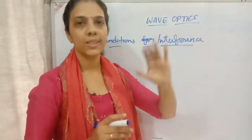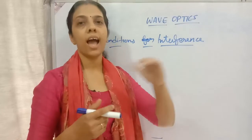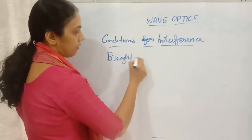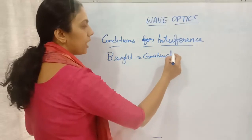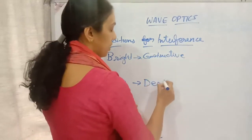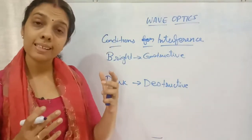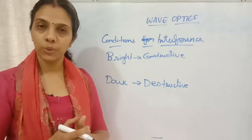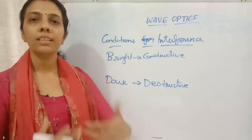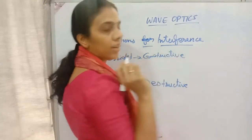Now we are going to consider what are the conditions for interference. In the interference pattern we observe alternate dark and bright fringes. Bright fringes are formed due to constructive interference, and dark fringes are due to destructive interference. Two crests joining together, or two troughs joining together, gives constructive interference. One crest and one trough joining gives destructive interference. So the path difference is what we need to consider.